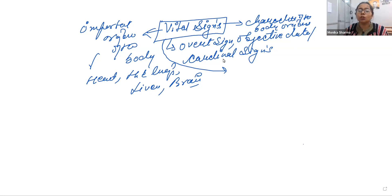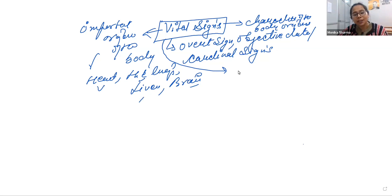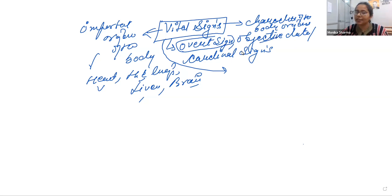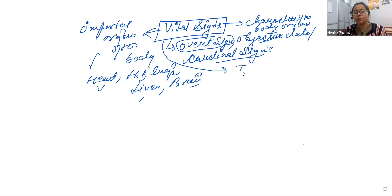Vital signs tell us whether our bodies are functioning well or not. They tell us about our heart, lungs, liver, and brain. We call them overt signs because they are observable in nature — this is why we also call them objective and cardinal signs, because we can observe them.